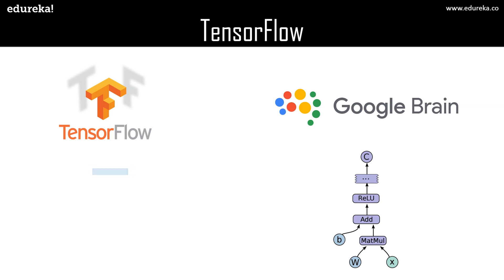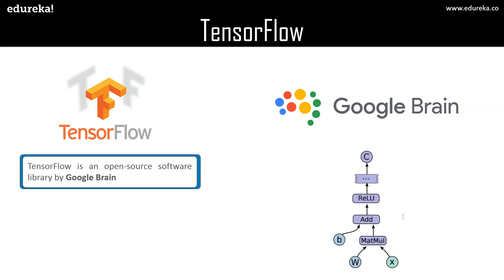Now, what is TensorFlow? TensorFlow is an open source software library by Google Brain for data flow programming across a range of tasks. It is a symbolic math library that is used for machine learning applications like neural networks.